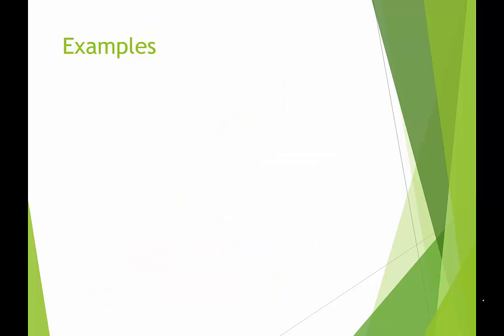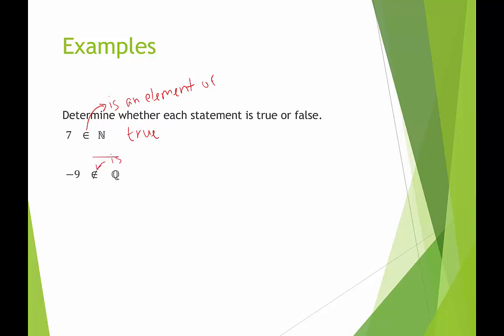Let's look at some examples to see how well you remember which letter stands for which subset of real numbers. We want to determine whether each statement is true or false. This symbol here means is an element of. So it's asking is seven an element of N, the natural numbers? Is seven a natural number? Yes, yes it is. So this would be a true statement. How about negative nine? This means is not an element of. So is negative nine not an element of Q, the rational numbers? That's not true. Negative nine is rational. This is a false statement.